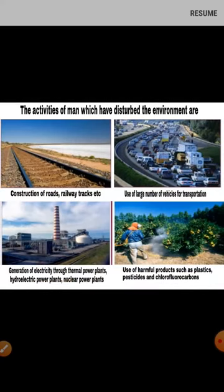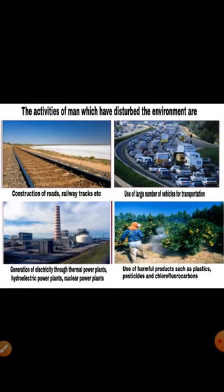Other damaging human activities include construction of roads and railway tracks, use of large numbers of vehicles for transportation, generation of electricity through thermal power plants, hydroelectric power plants, and nuclear power plants, as well as use of harmful products such as plastic, pesticides, and chlorofluorocarbons. These are the activities that have disturbed and polluted the environment.